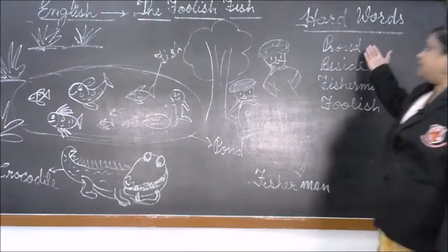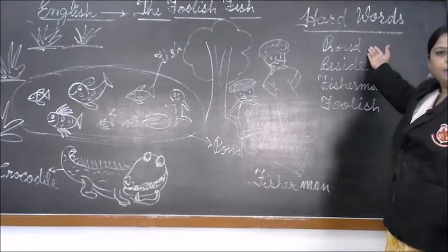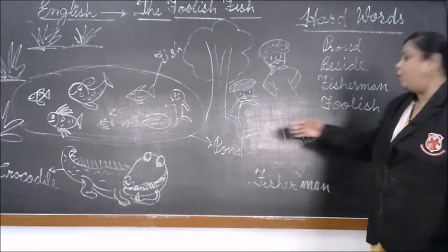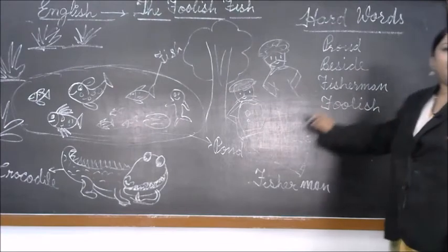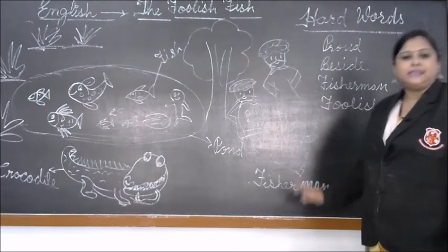Here I am going to tell you some hard words also. Proud means ghaman karna. Beside means piche. Fisherman means machwaare. Foolish means silly.